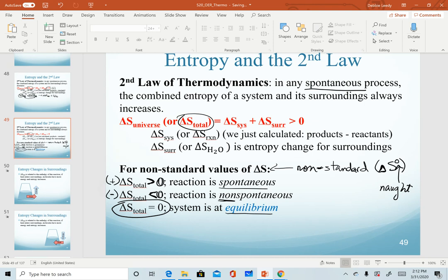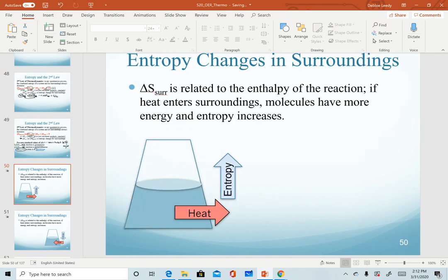All right. So as we mentioned, we've already calculated the entropy change for the system or reaction. That was our equation to calculate the products minus reactants. So what we need to focus on now is how do we calculate the entropy change for the surroundings? To do that, we're going to refer to this image. So imagine we have our reaction or our system in here. This is in solution.